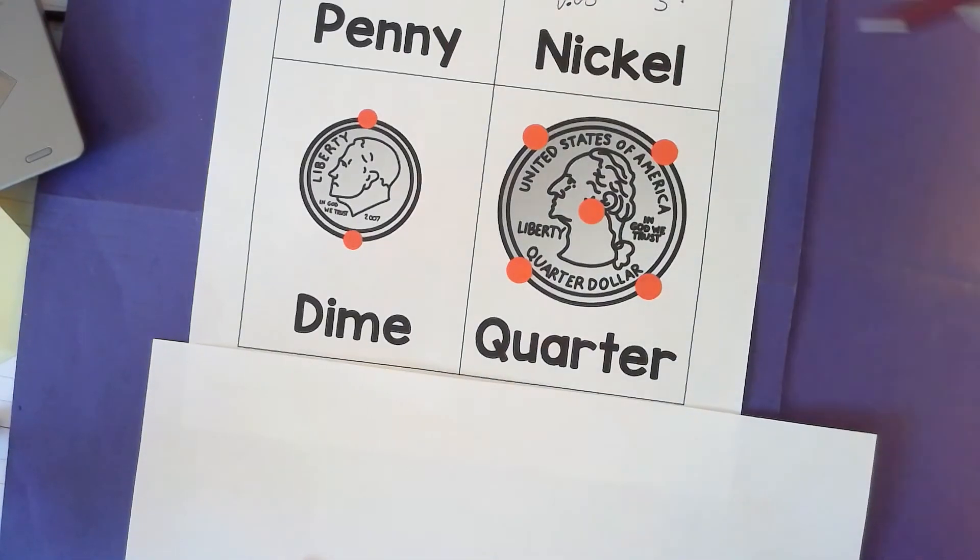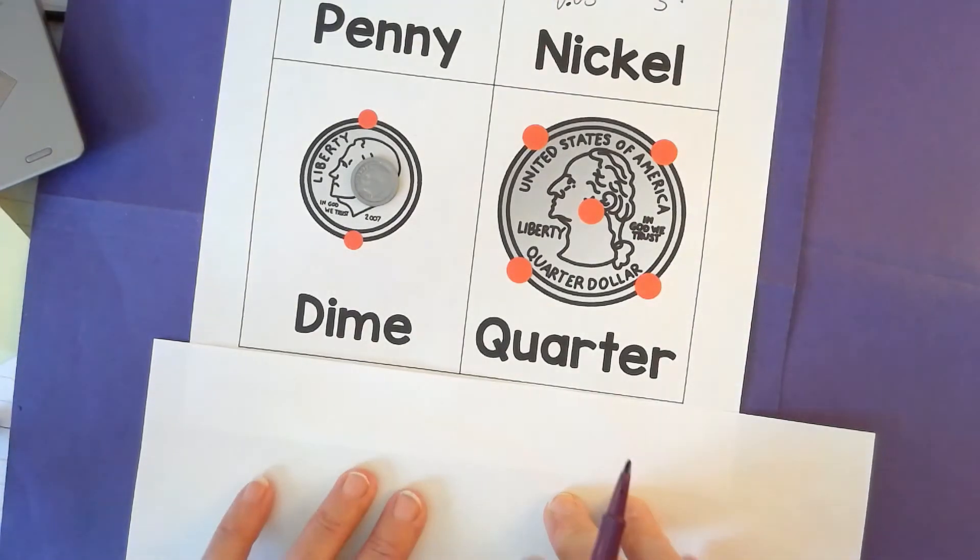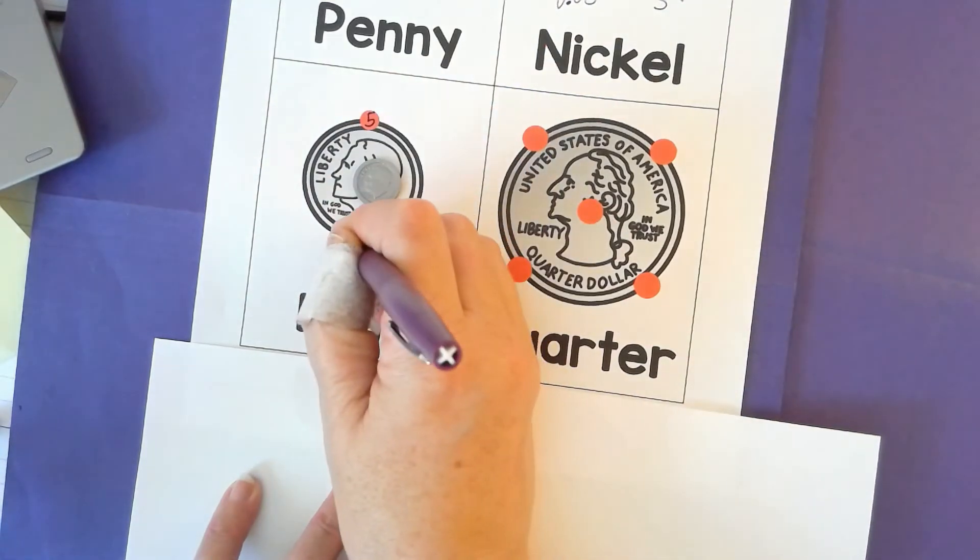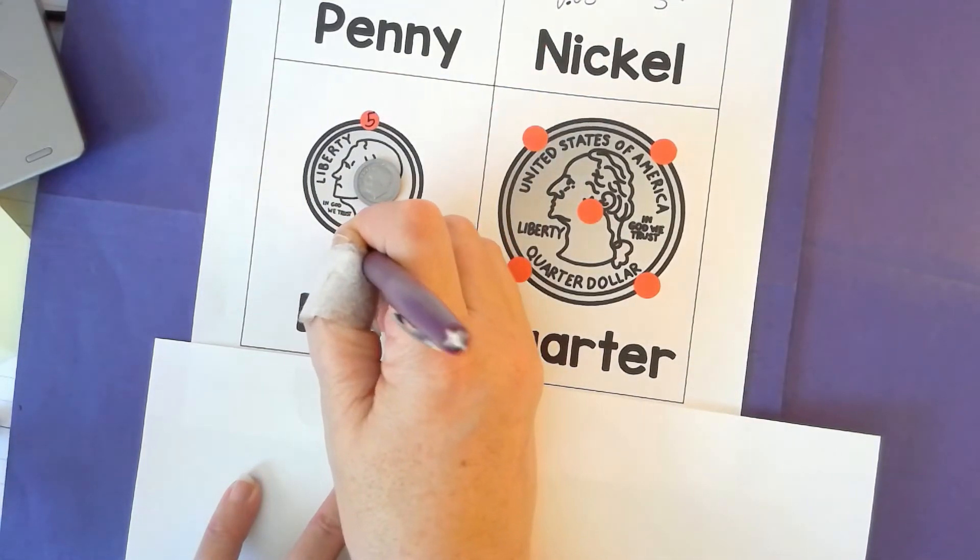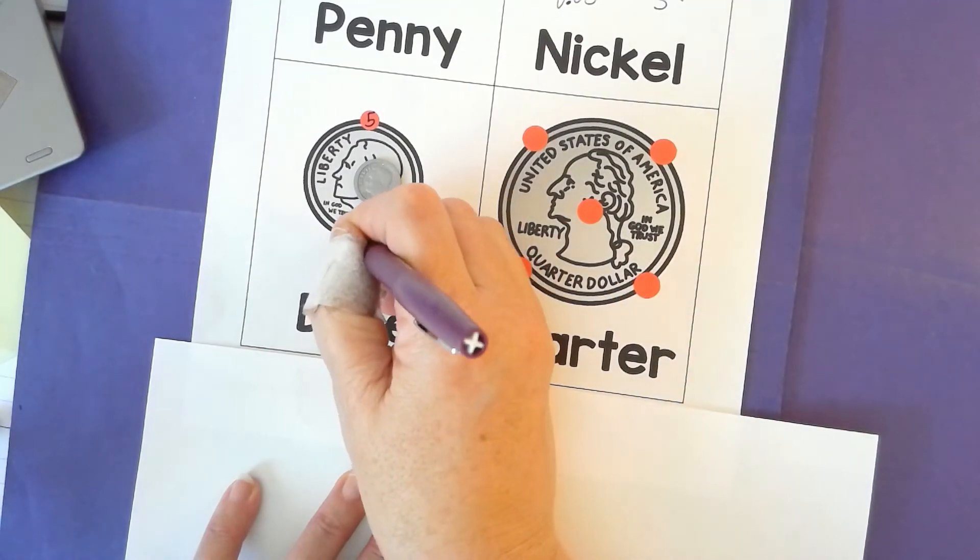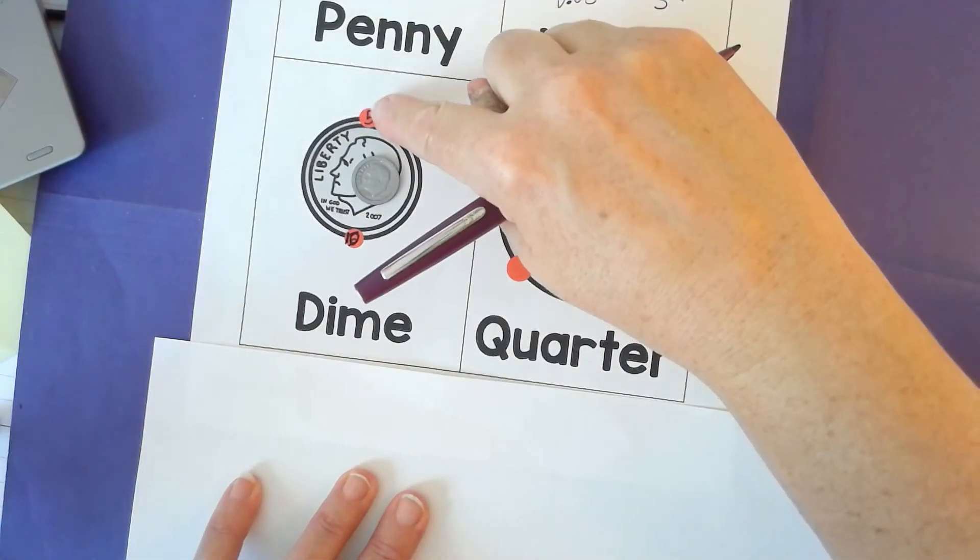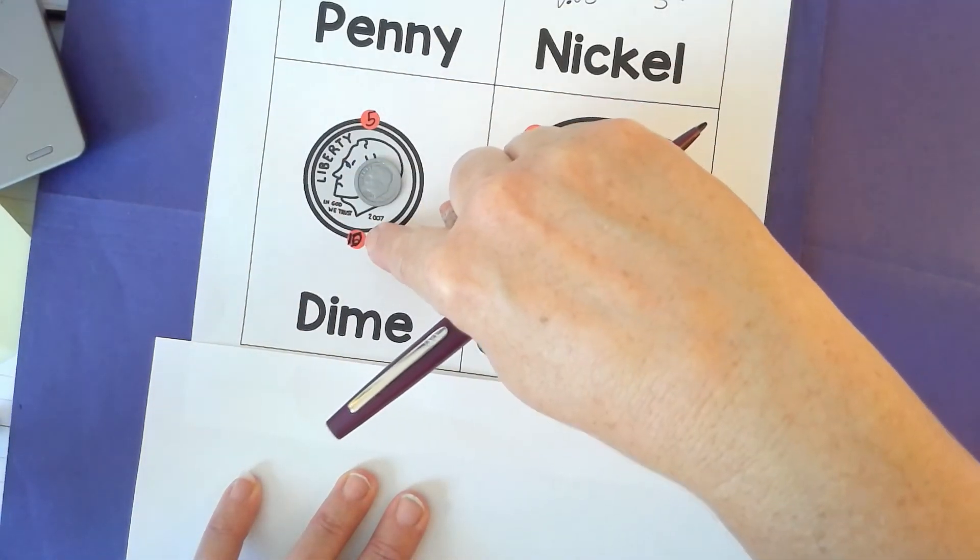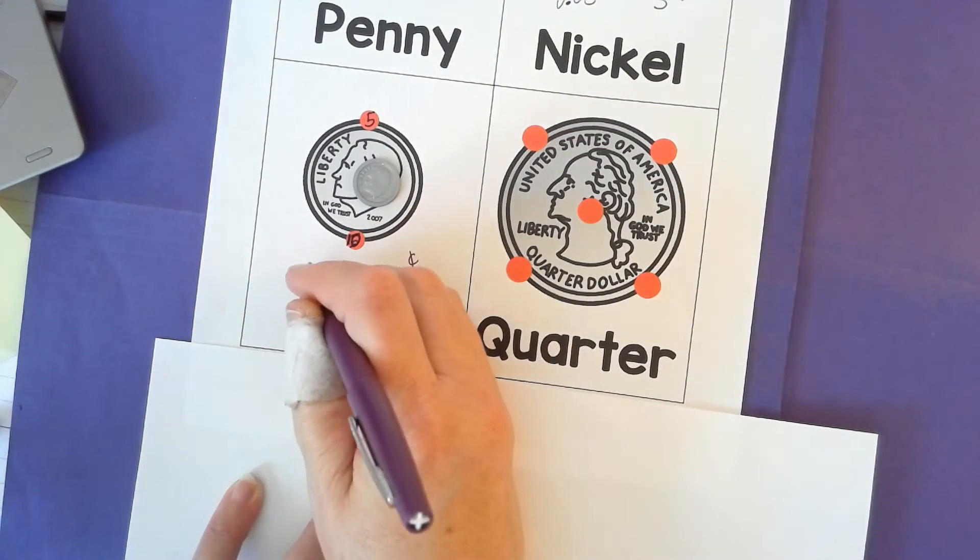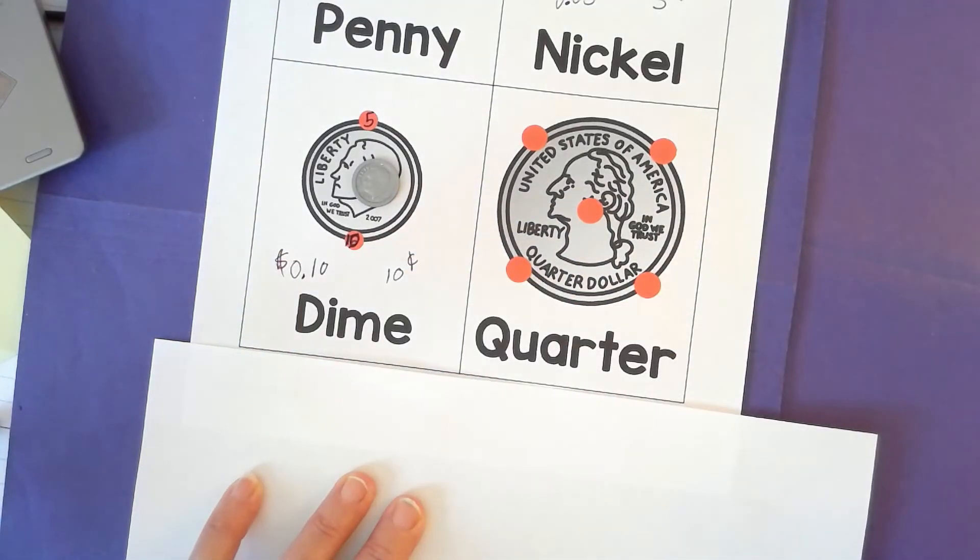Then we have the dime, which looks like this. And again, we're counting by fives. So five and I think I'm going to make that into a 10 so you can understand better. So each time we touch, we're going to count five, 10. So this is 10 cents, or you can write it like this, 10 cents.